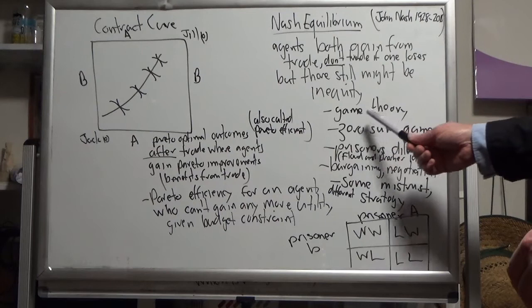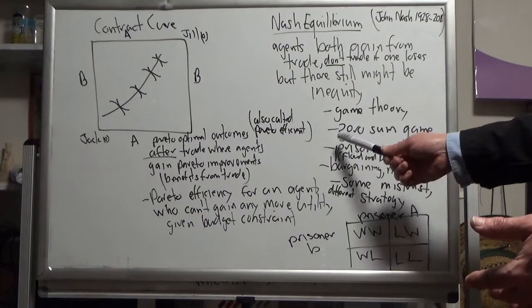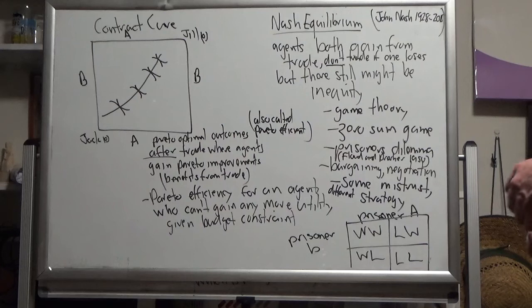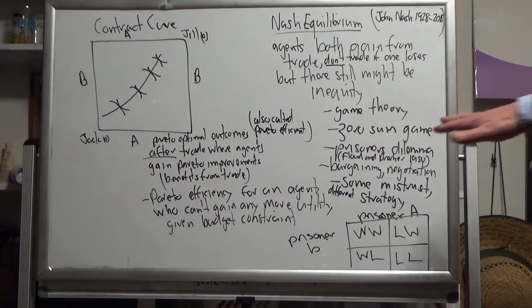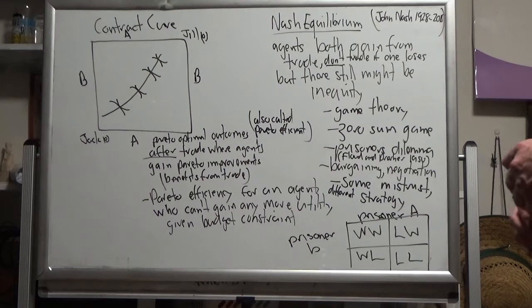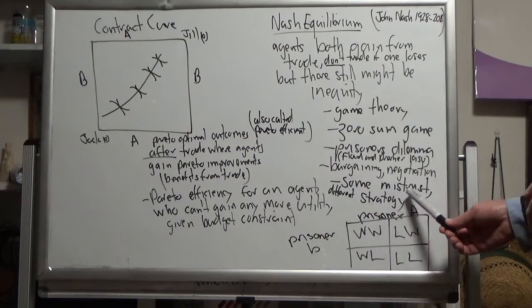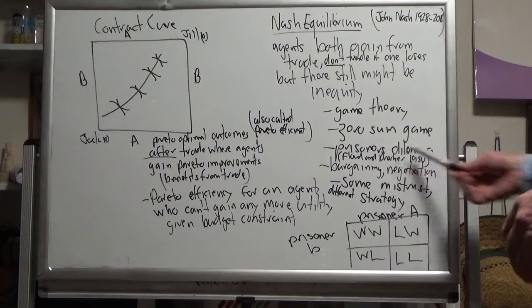Nash incorporated game theory strategy, different payoffs into the model. He brought zero-sum game into it. An example of zero-sum game was put forward by Flood and Dresser in 1950 called the prisoner's dilemma. Nash was very similar in thinking on zero-sum game. It involves some bargaining, negotiation, some mistrust, maybe different strategies. The example of prisoner's dilemma is two prisoners locked in the same cell waiting for their trial.